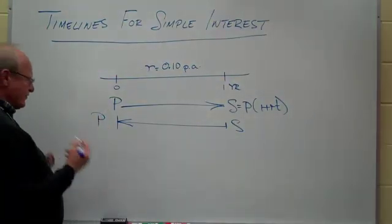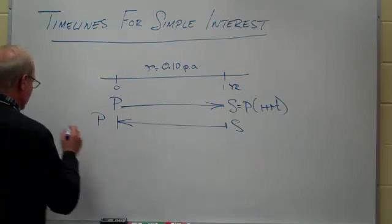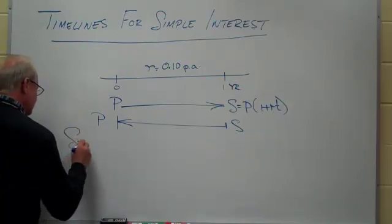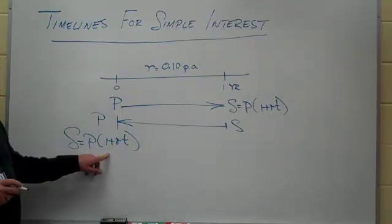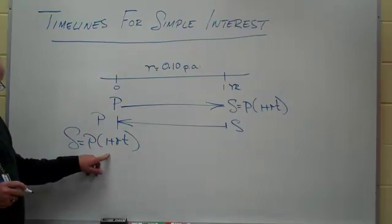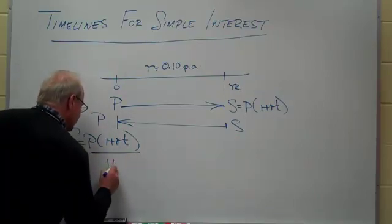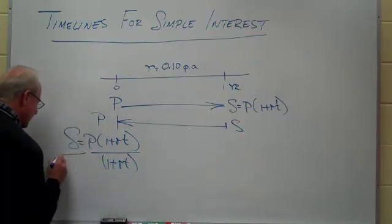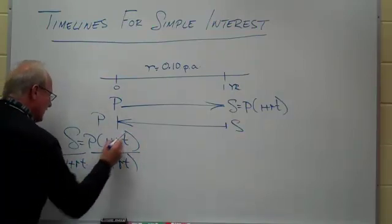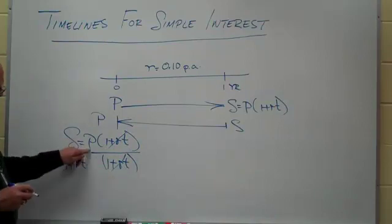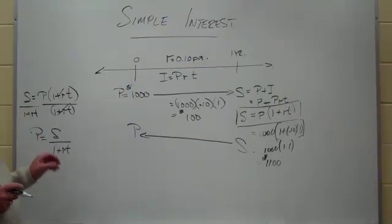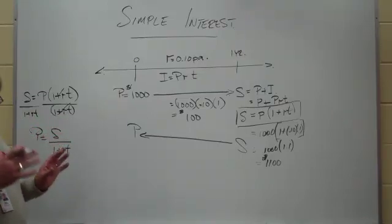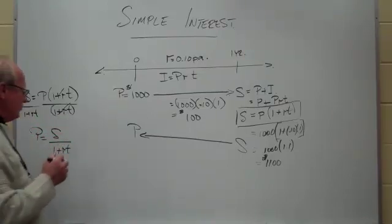Now manipulating this formula, most of you are going to say, well if S is equal to P times one plus RT, and I want to know what this P is, I would divide both sides by one plus RT. So I will divide by one plus RT, and divide here by one plus RT, leaving me the fact that P is equal to S divided by one plus RT. We know this formula is mathematically correct, but there's an easier way that you can write it that will make you be able to remember it in the future.